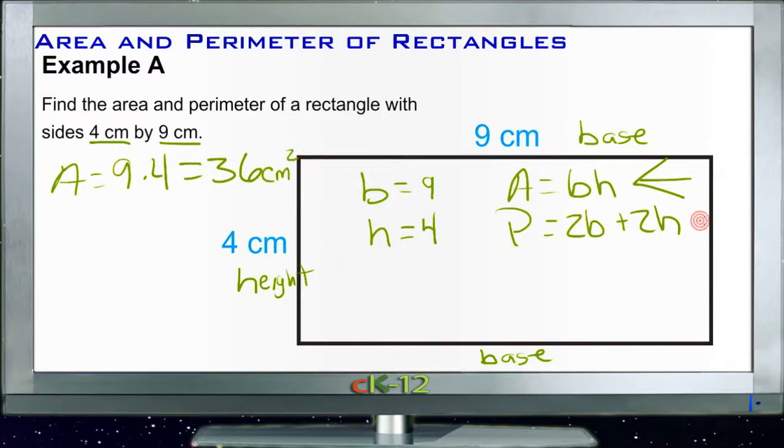And then our perimeter, 2B plus 2H, P would be 2 times 9 plus 2 times 4. That's 18 plus 8, or 26. And those are just centimeters because we're not covering the space with little squares. We're just measuring that distance from the outside edge.